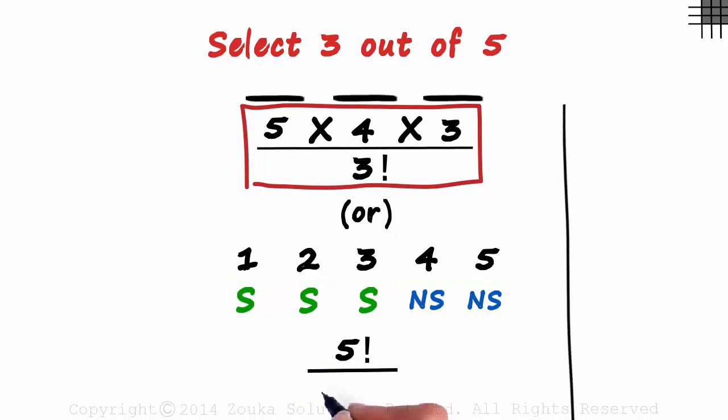we divide this by 3 factorial. And as the remaining two are in another category, we divide it by 2 factorial. This will give us the same answer as this one.